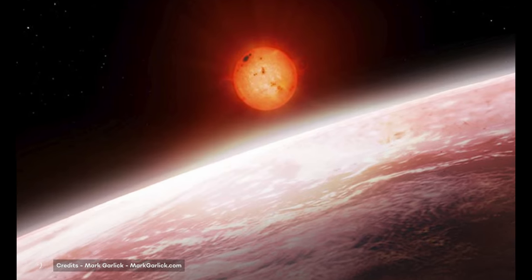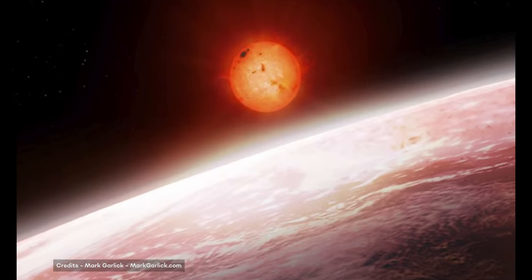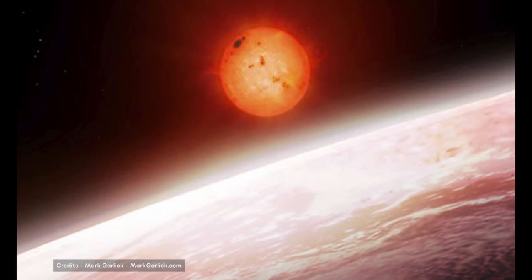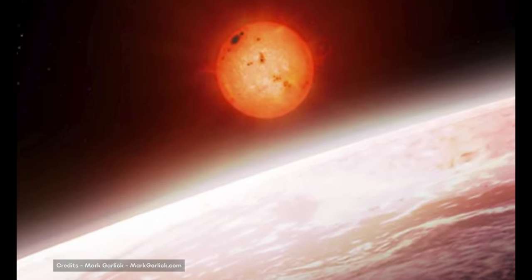We said astronomers detected Gliese 581c using the HARPS instrument, which uses the radial velocity method for hunting exoplanets. How does this method work?